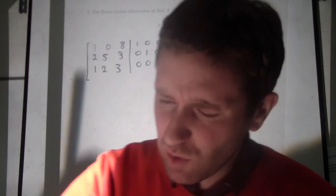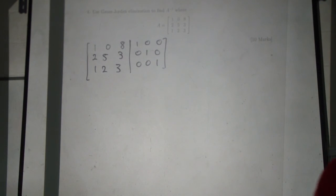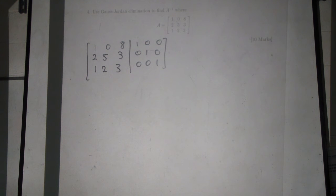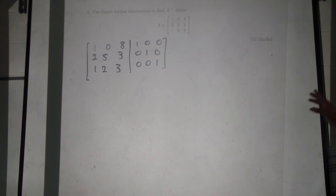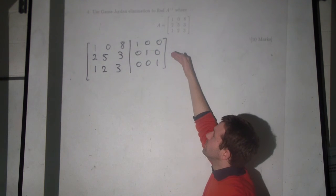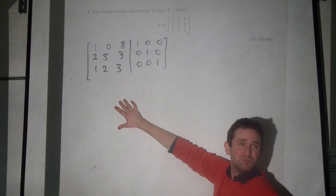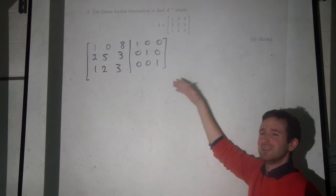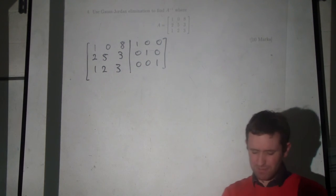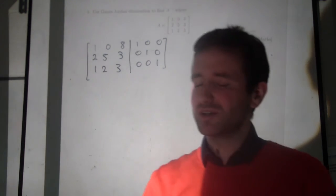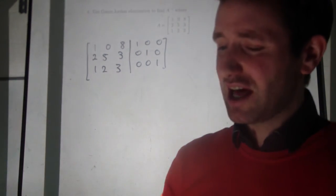We're going to get 1, 0, 0. I would say that probably doing one row operation per frame is too slow. If you do row 2 minus twice row 1 in a whole new frame box, that's too slow. Maybe not in the test, but in the exam — you want to do as many as you can at a time.